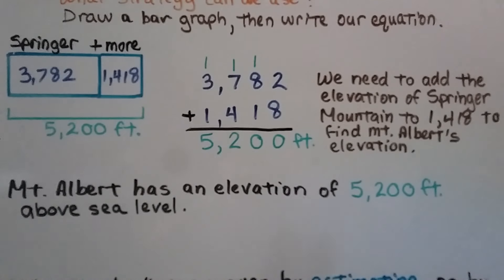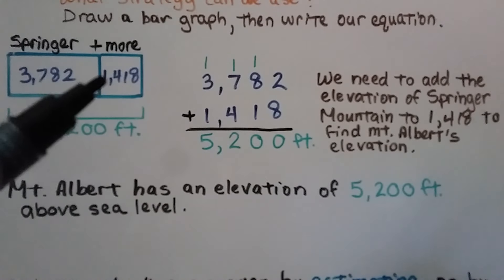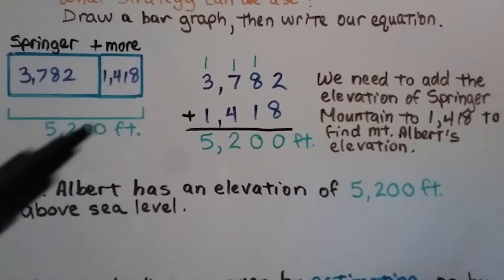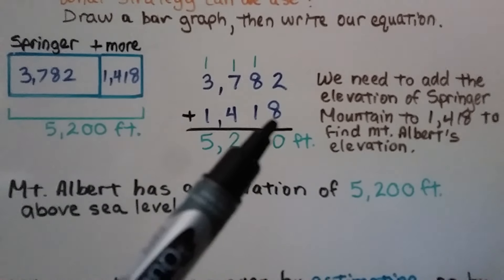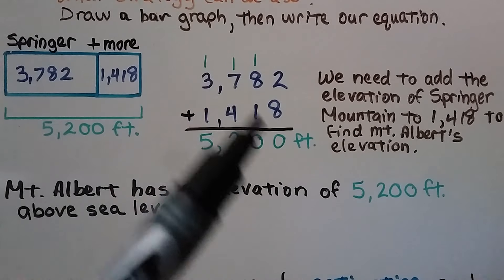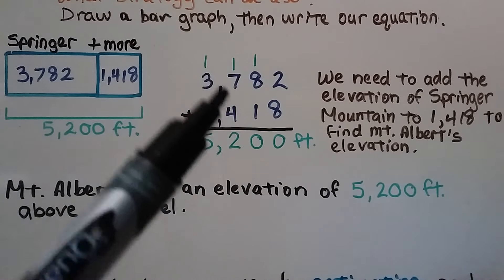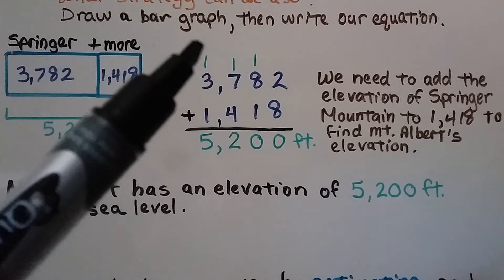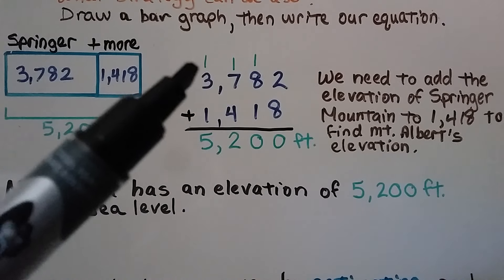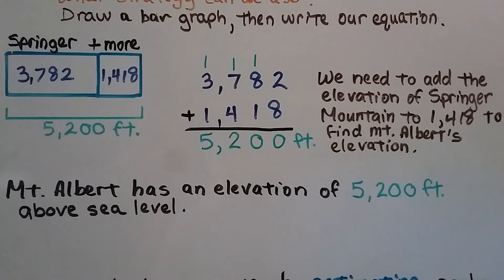We need to add the elevation of Springer Mountain to 1,418 to find Mount Albert's elevation. We add 3,782 plus 1,418. 8 plus 2 is 10 — regroup the 1, put the 0 down. 8 plus 9 is 17, regroup the 1, put the 7... actually 8 plus 1 plus 1 is 10, regroup and put 0 down. 7 plus 4 is 11, plus 1 more is 12 — regroup the 1, put the 2 down. 1 plus 3 plus 1 equals 5. We have 5,200 feet. Mount Albert has an elevation of 5,200 feet above sea level.